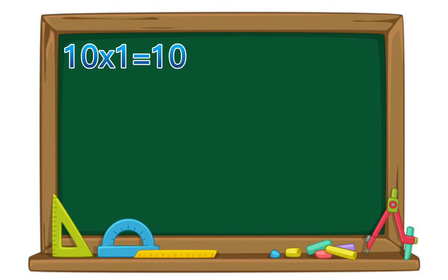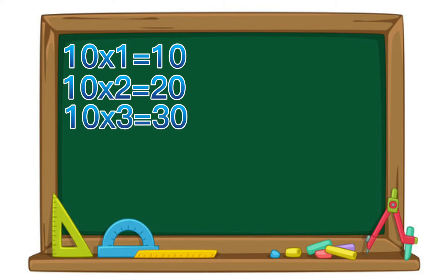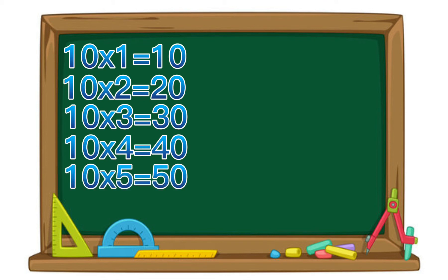10 times 1 equals 10. 10 times 2 equals 20. 10 times 3 equals 30. 10 times 4 equals 40. 10 times 5 equals 50. 10 times 6 equals 60.